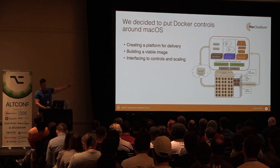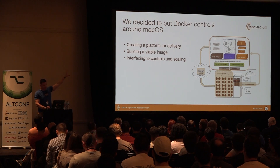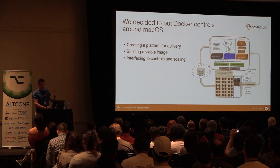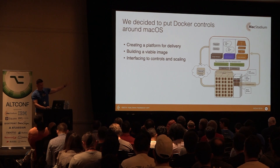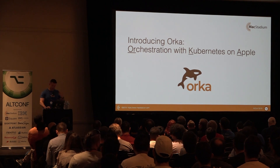It wraps all this enterprise storage, networking, and hardware capacity and creates a virtual namespace for your Mac OS images, a blank namespace where you can put any kind of container you want, and the services that help you drive that. We're introducing it today — it's called Orca.